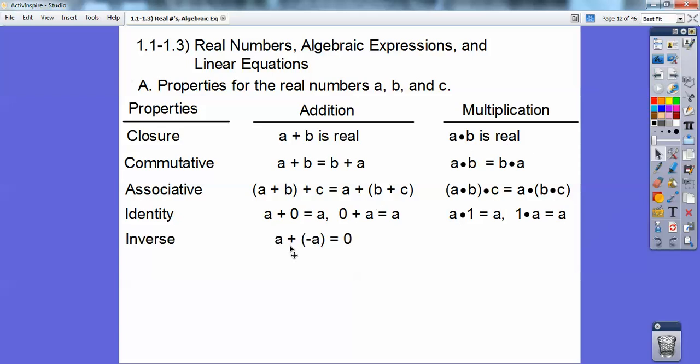Inverse property, any number plus its opposite is equal to zero. And then any number times its reciprocal equals one, as long as that number is not zero. Zero does not have a reciprocal. Note a and opposite a are opposites of each other. And then a and one over a are called reciprocals of each other.